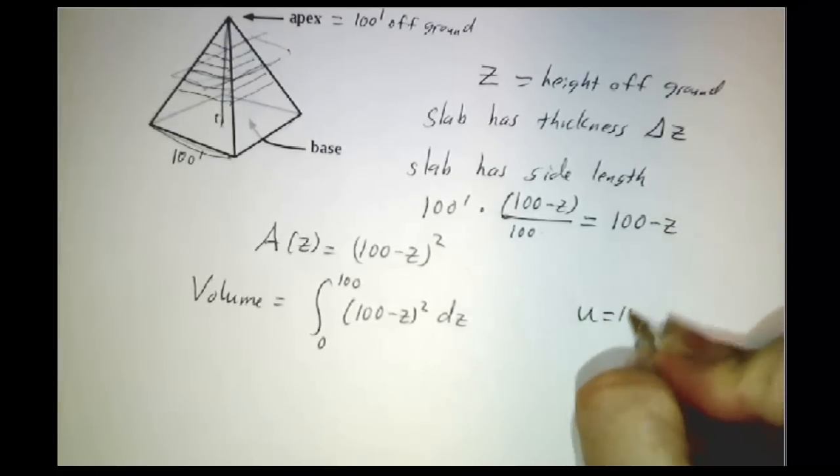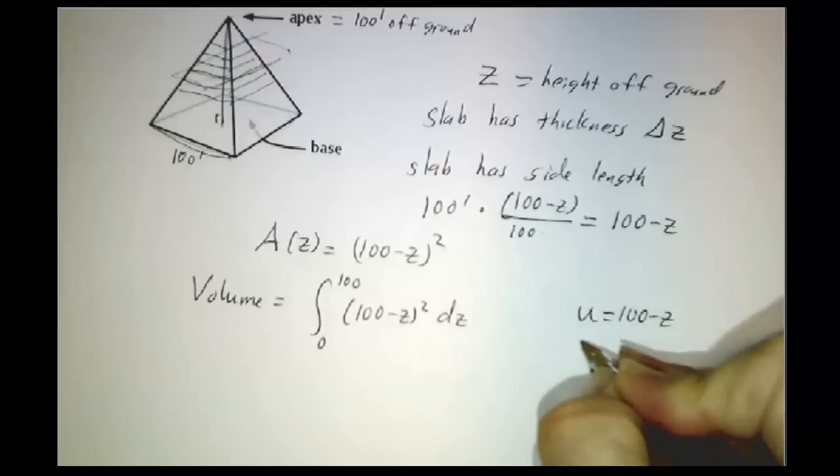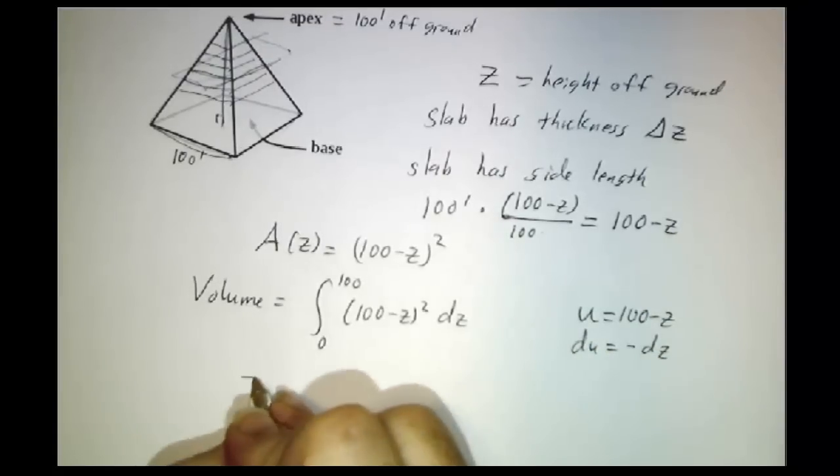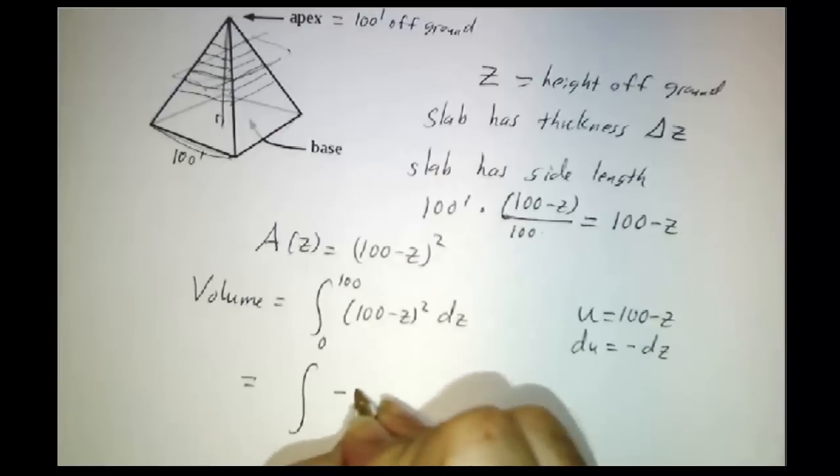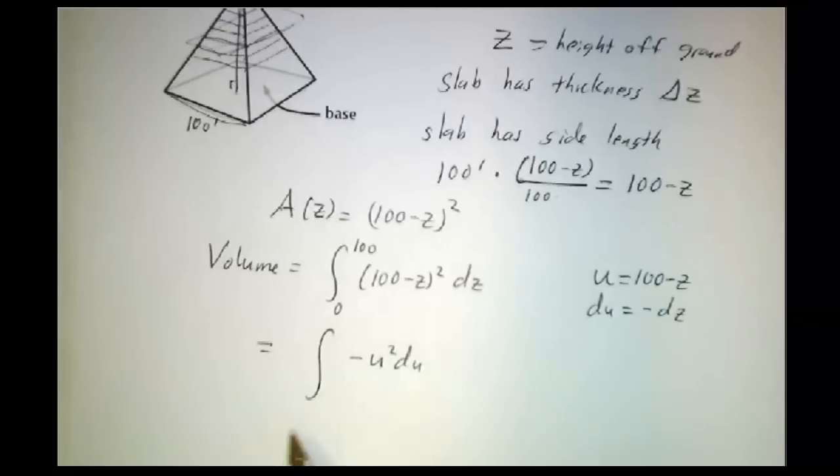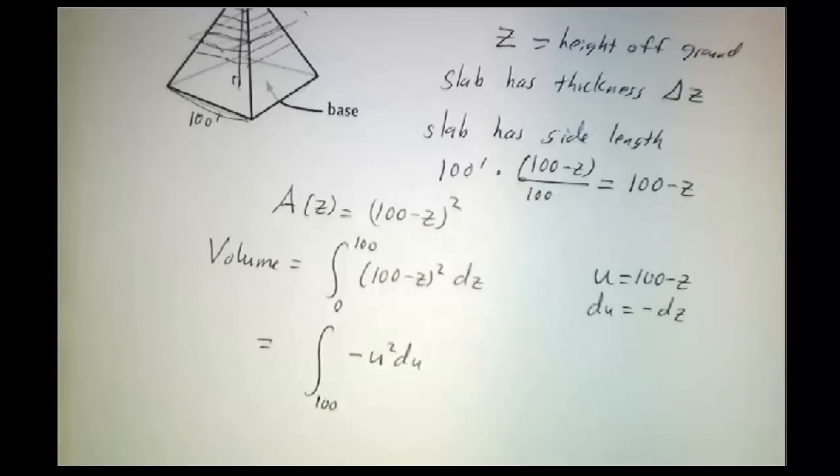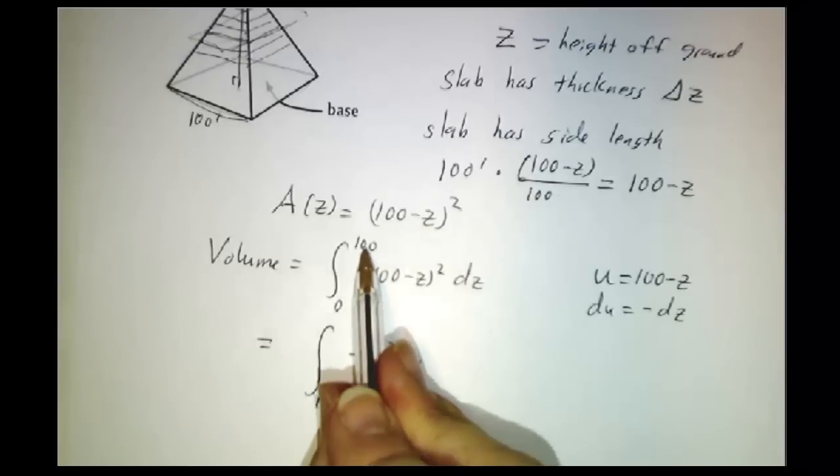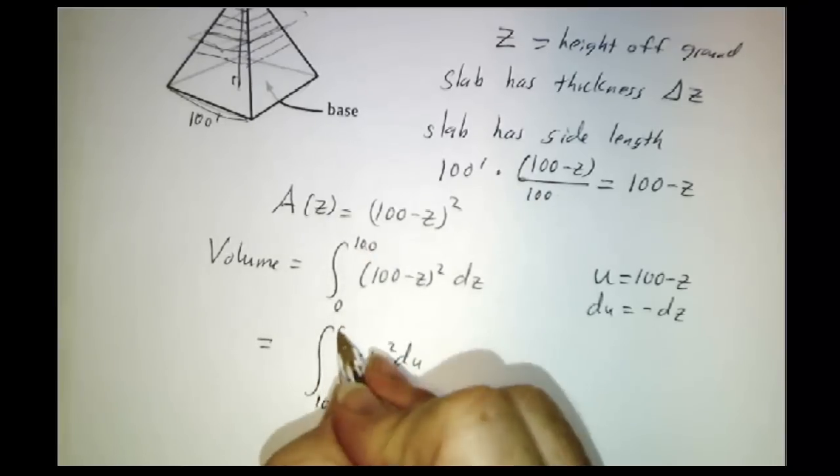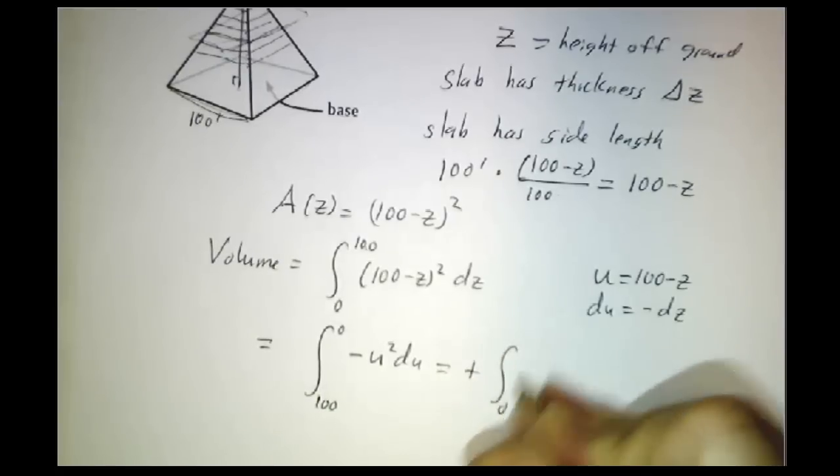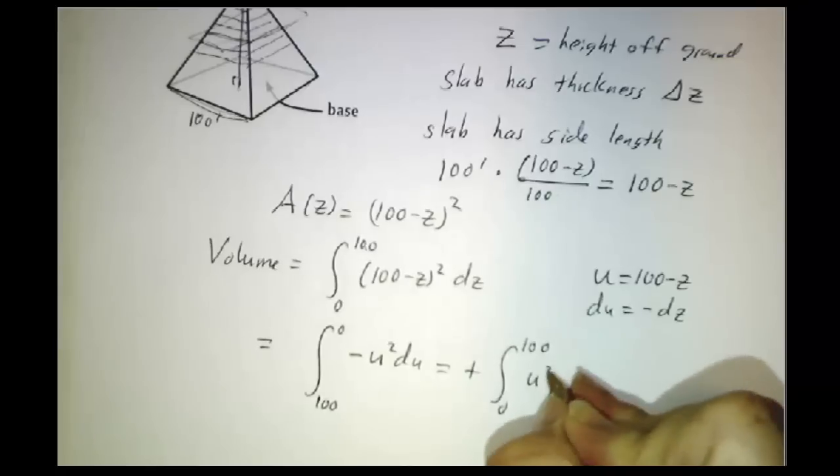If you let u equals 100 minus z, du is minus dz. So this becomes the integral of minus u squared du. But let's see, when z is 0, u is 100. When z is 100, u is 0. And so this becomes plus the integral from 0 to 100 of u squared du.